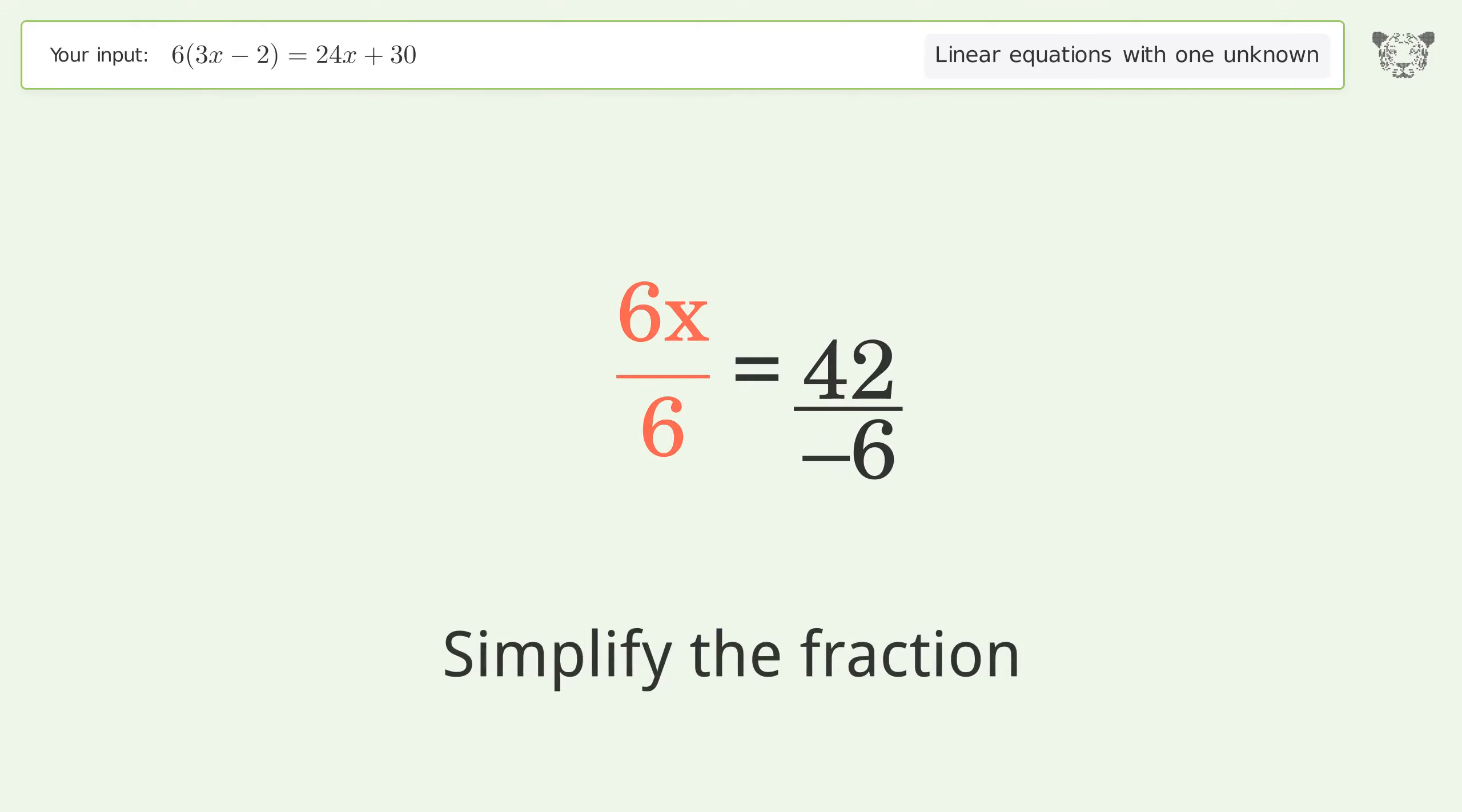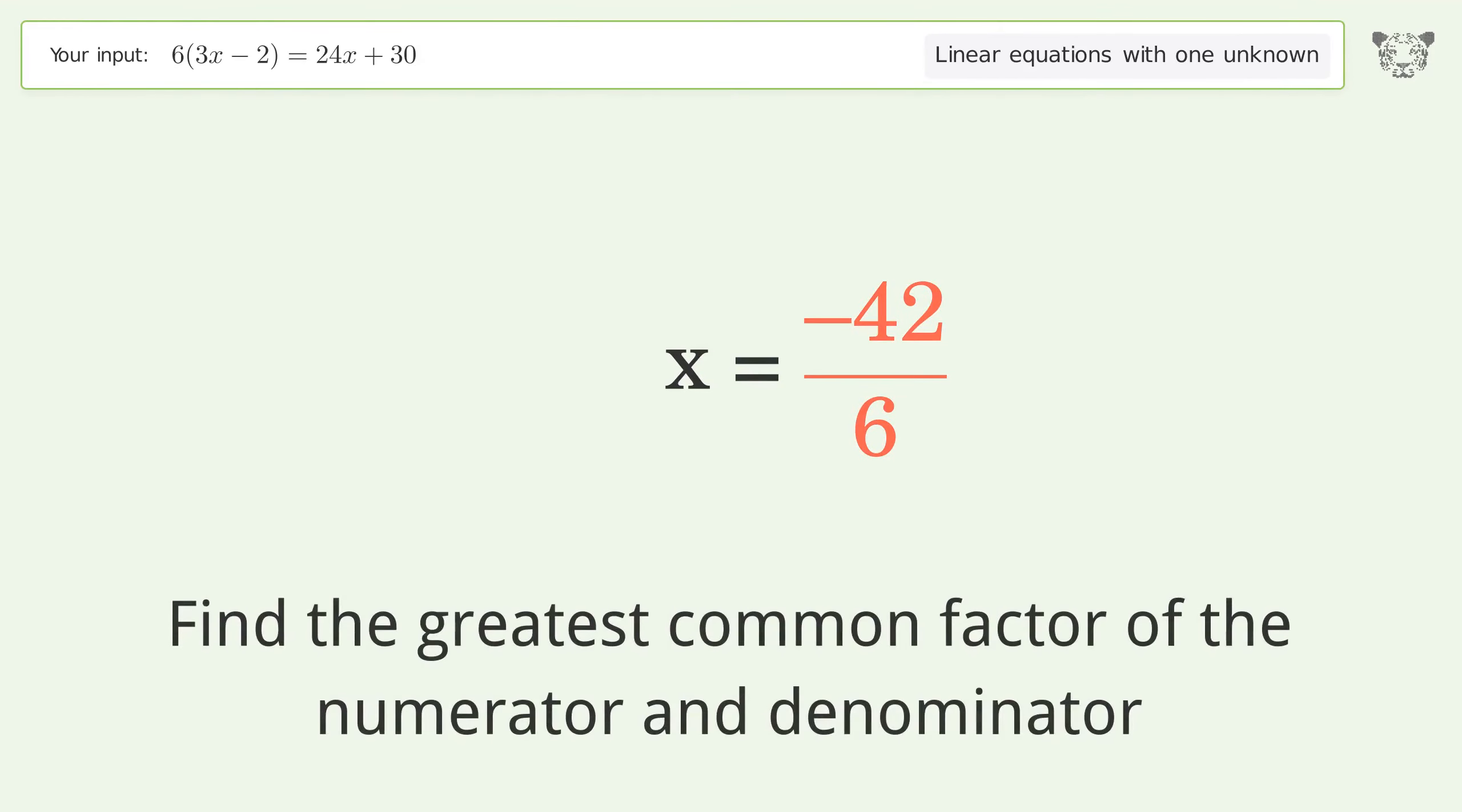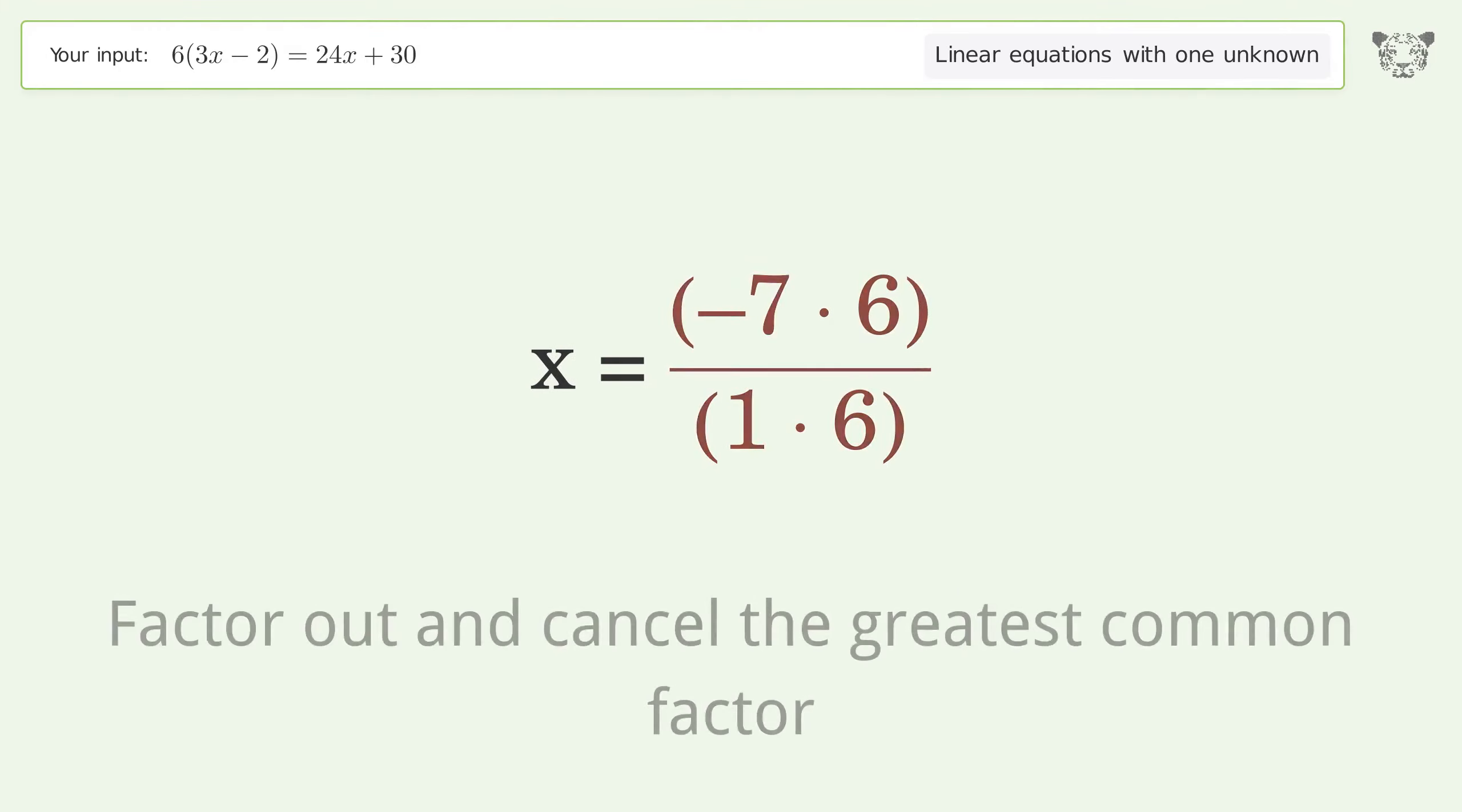Reverse simplify the fraction. Move the negative sign from the denominator to the numerator. Find the greatest common factor of the numerator and denominator, factor it out, and cancel the greatest common factor.